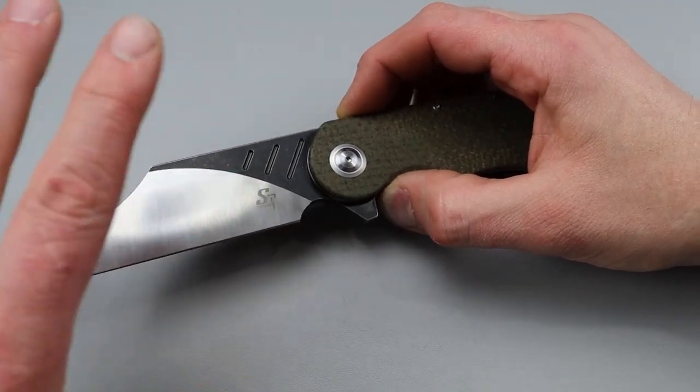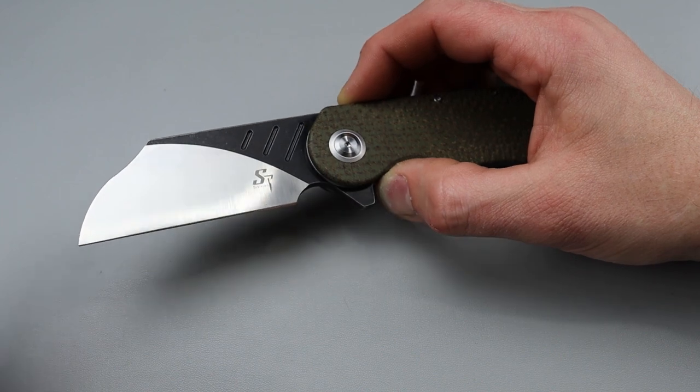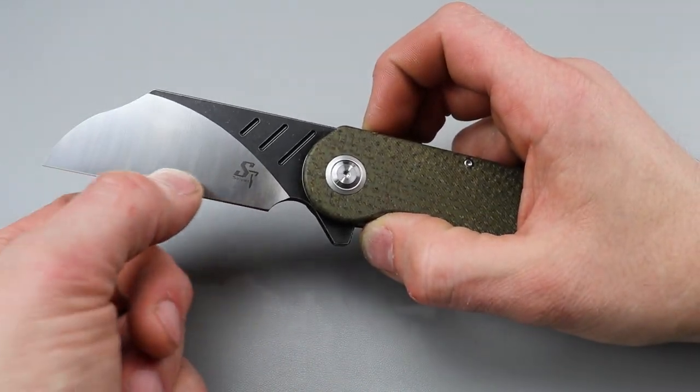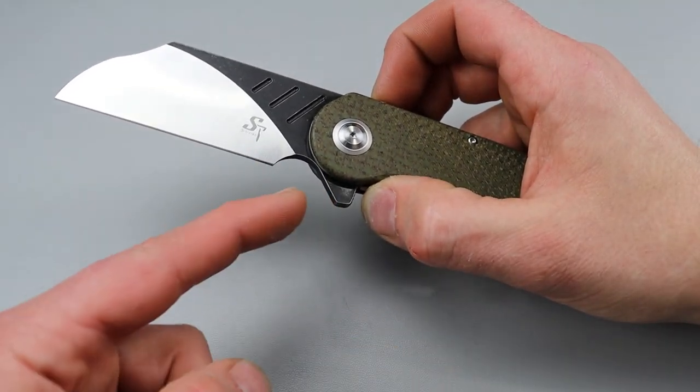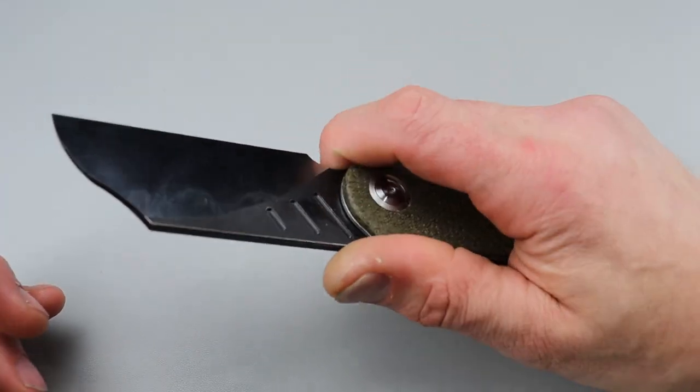But if you lower back the angle significantly, then it's going to get a little bit of a smile. It won't be so horrible on this because of the choil, but it will have a little bit. When I measured it, this was about 15 thousandths behind the edge and this was 23-24 thousandths right here, so it goes from thicker to thinner. The geometry is really good though, really good cutting geometry.